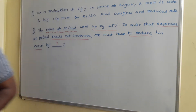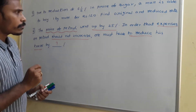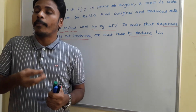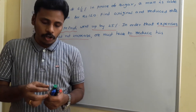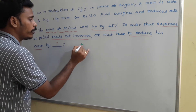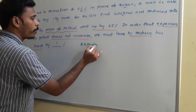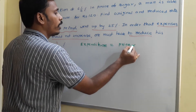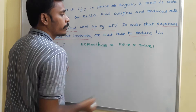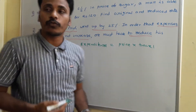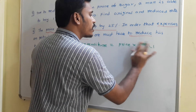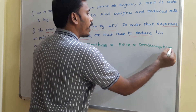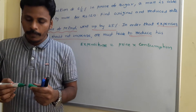Look at the question once again. The expenditure on petrol is usually nothing but price of petrol multiplied by travel — or in my point of view, travel is nothing but consumption. For example, if the price of petrol is 80 rupees per liter and I travel some 40 kilometers, we need to calculate the price as well as the consumption depending upon the capacity of the vehicle.